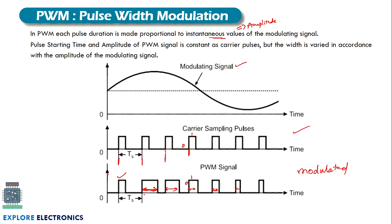You can observe that the modulated signal amplitude is constant in PWM — we get a constant amplitude at the modulated output, but the width varies. The wider the output pulse, the greater the power requirement, because if we transmit a signal continuously for a longer duration, the transmitter requires a high-power device. That is the key thing to understand in pulse width modulation.